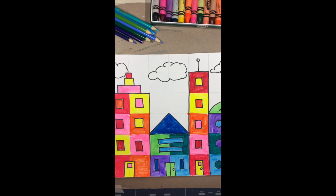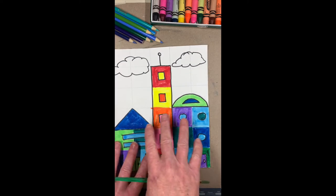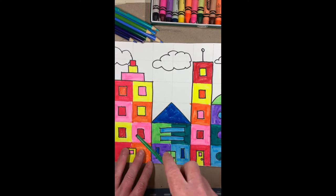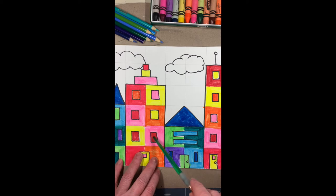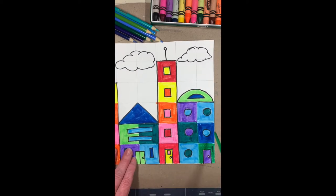All right, third graders. I finished coloring my buildings, and it turns out I told you last week not to color the windows, just color the windows like warm colors for the warm building, cool colors for the cool buildings.